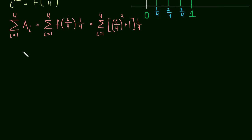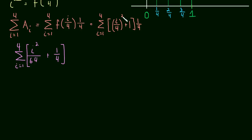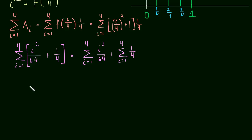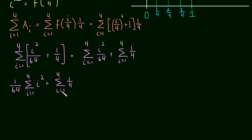Now we can evaluate this sum. As i goes from one to four, let me do two steps at once. This becomes i squared over 64 plus one-fourth. I squared the i over four and then distributed the one-fourth inside. As you saw in the last video, this sum can be broken into two sums: the sum as i goes from one to four of i squared over 64, plus the sum as i goes from one to four of one-fourth.